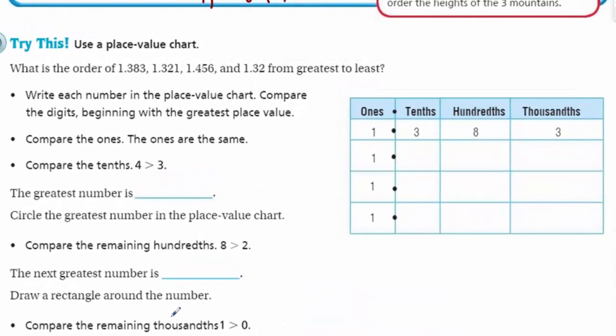use a place value chart. It says try this. Okay. Now, this is the point where you might want to put the video on pause, you know, just hit pause. See if you can work this out yourself, since you just received some instruction on this lesson and then turn it on, hit play. And then you can see how you did. So what is the order of one point three, eight, three, one point three, two, one, one point four, five, six, and one point three, two from greatest to least? Oh, greatest to least. Got to be really careful. That's right. When we read these problems, especially for like assessments, you know, for your teachers, you want to always make sure that you carefully read the instructions.